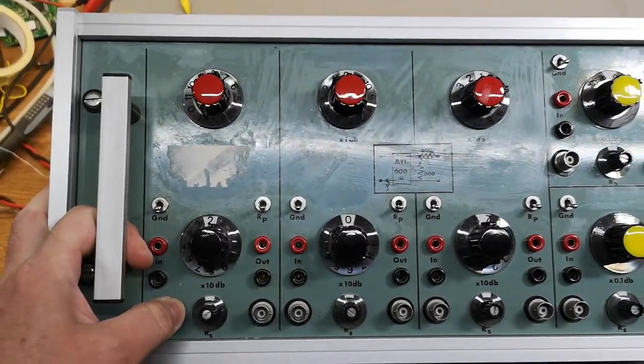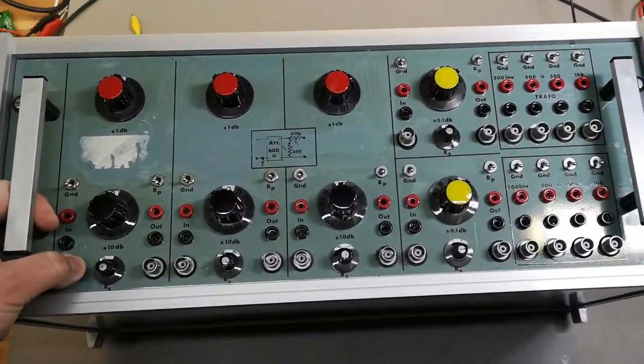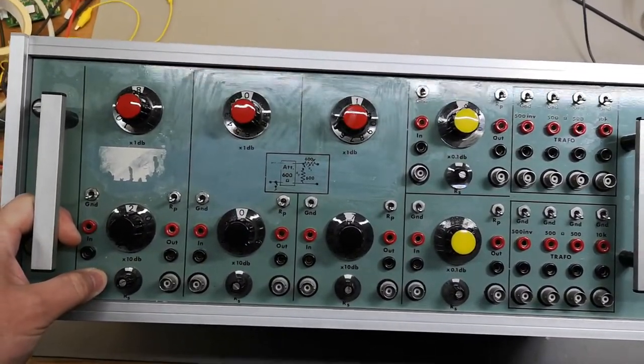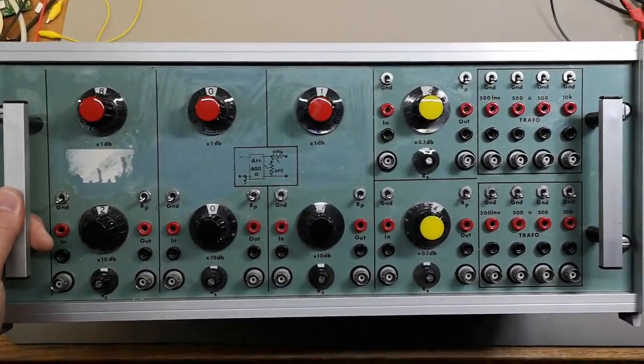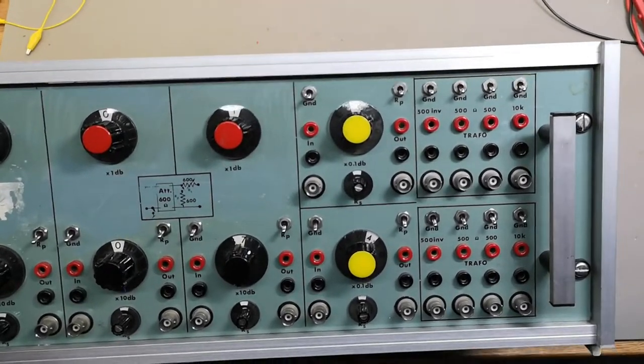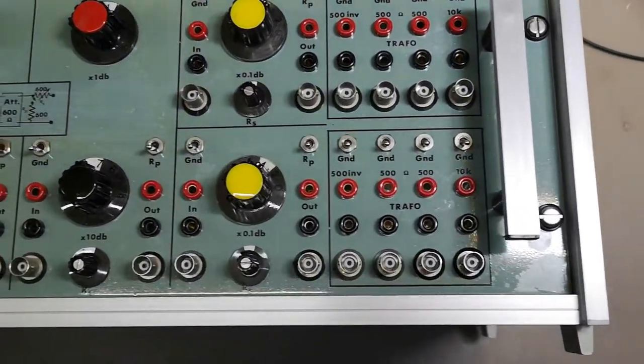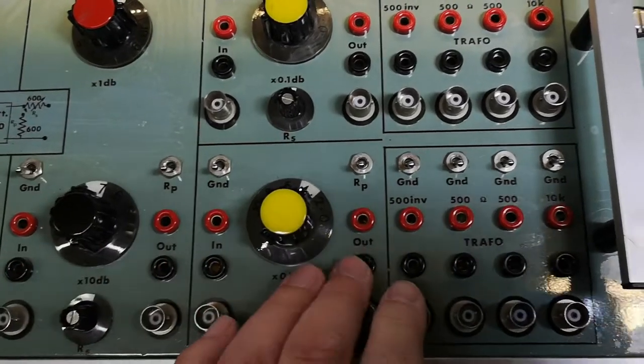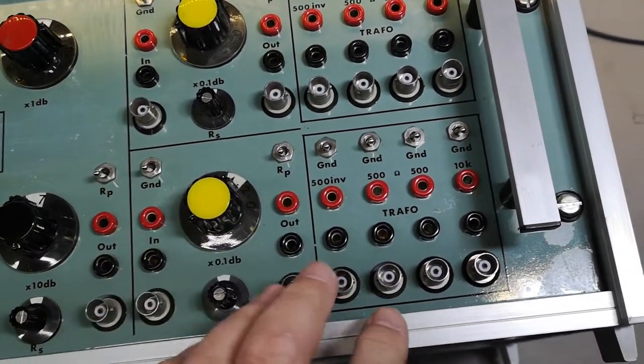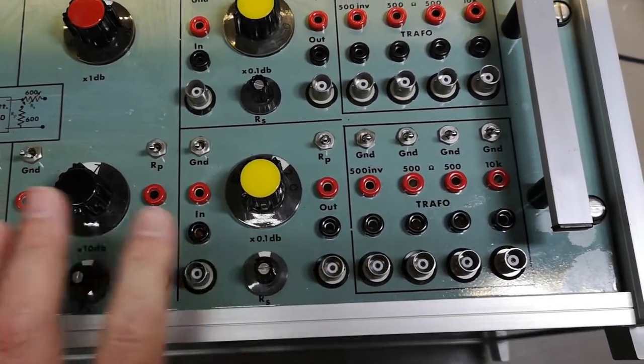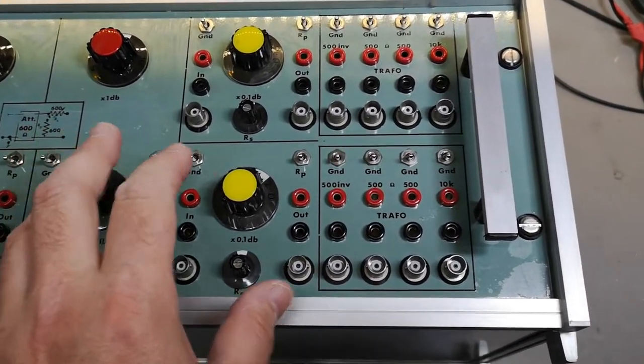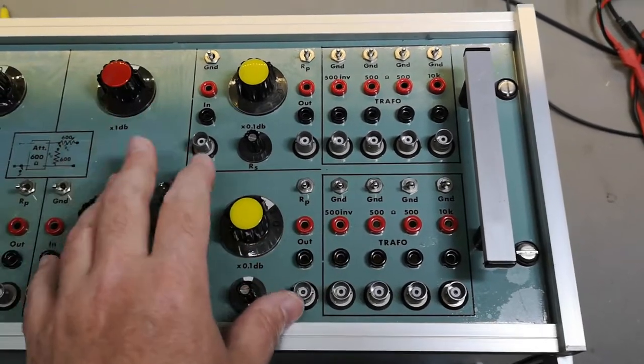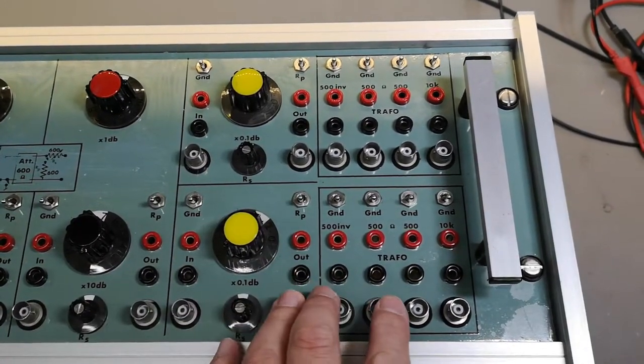So I will call this unnamed audio adjustment box because I really think this has something to do with audio signals. It's full of BNC connectors, also on the back. Only BNC connectors on the back. There's no DC, AC, anything else but BNC connectors on the back.